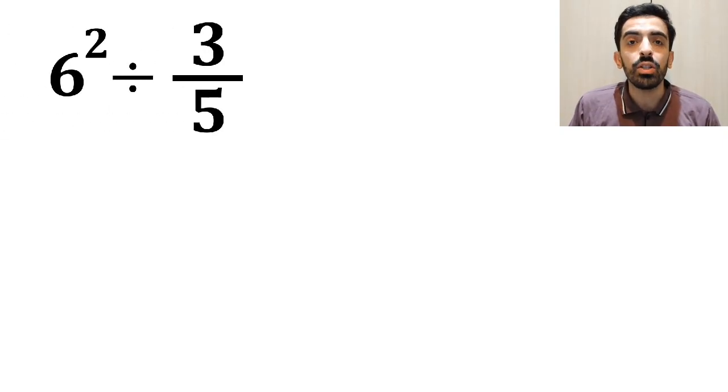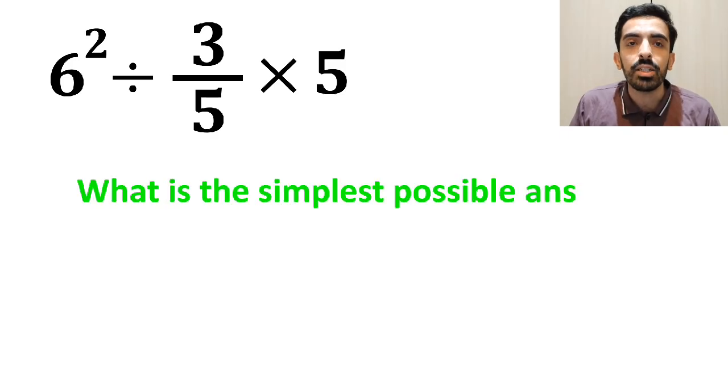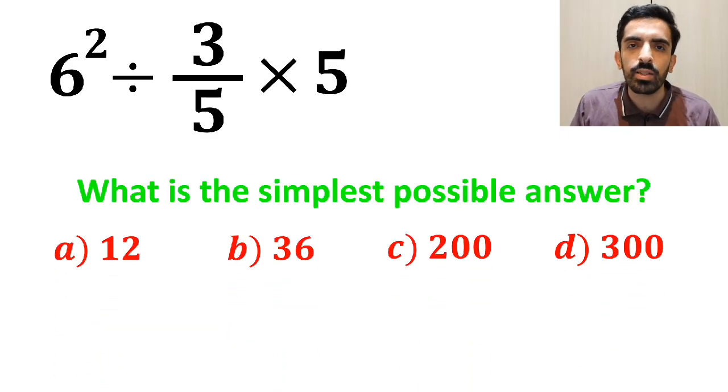If we have the expression 6 to the power of 2 divided by 3 over 5 multiplied by 5, then what is the simplest possible answer to this question? Which option do you think is the correct answer to this question?